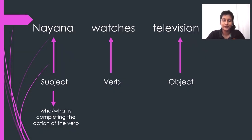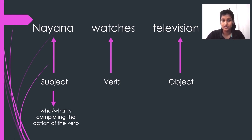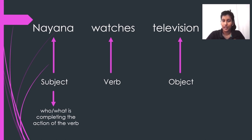To make this more clear, we will go to an example. 'Nayana watches television.' Nayana is the subject, watches is the verb, and television is the object. Nayana is the subject — that means who is completing the action of the verb. What is Nayana watching? The television. So the television is the object. In active voice, we can easily identify who is doing what.